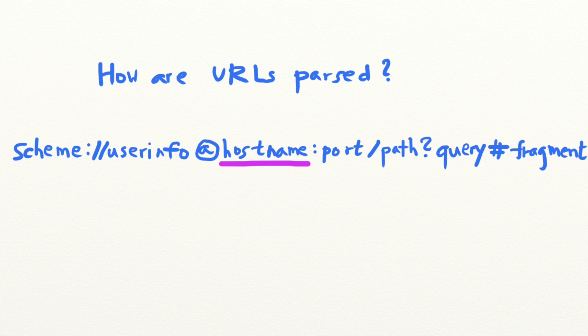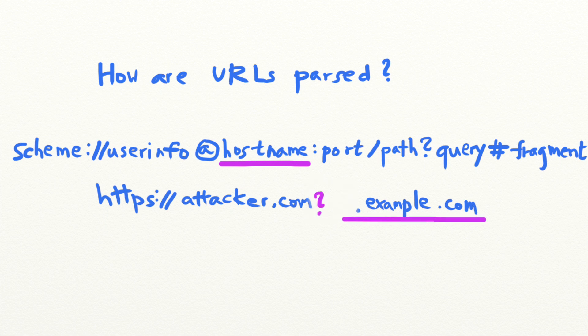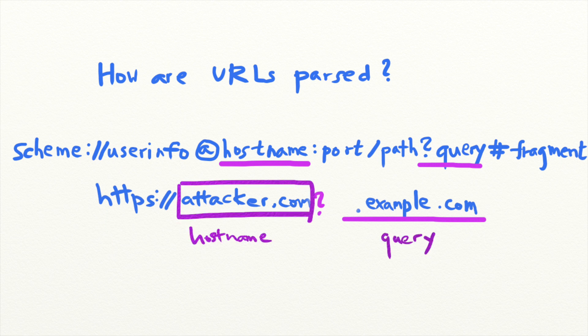One source of bugs is the inconsistency between how validators and browsers decode non-ASCII characters in URLs. For example, how should this URL be decoded? Let's say that this URL has passed URL validation and the validator has determined that example.com is its domain name. Several scenarios could happen. The first happens when browsers decode non-ASCII characters into question marks — in this case, example.com becomes part of the URL query and not part of the hostname, and the browser would therefore navigate to attacker.com instead.